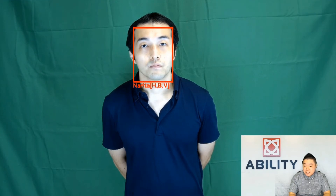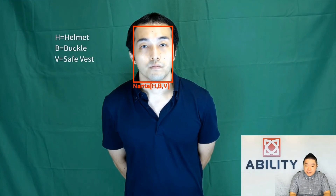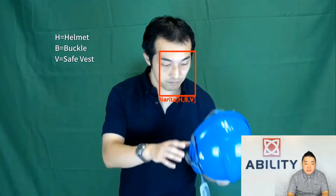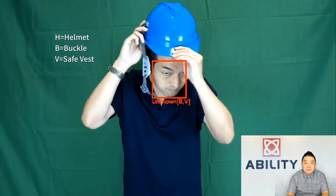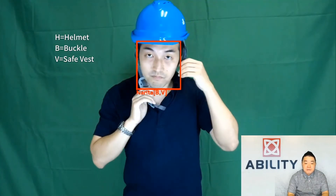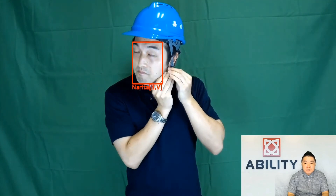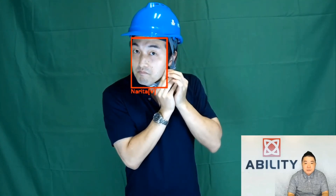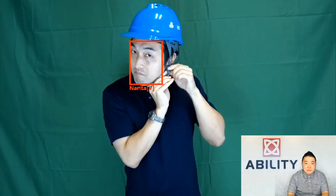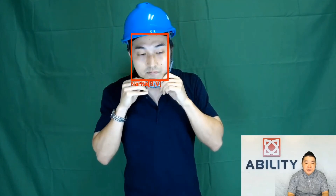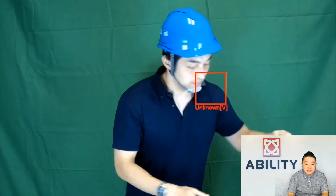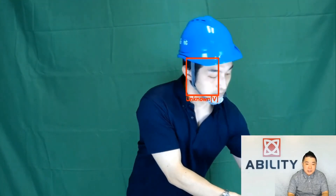This person's name is Norita. The red frame indicators stand for: H for helmet, B for buckle up, and V for vest. Norita will put on all three of these required items. Once all requirements are met, the frame will turn green, indicating the person is qualified to pass this checkpoint.